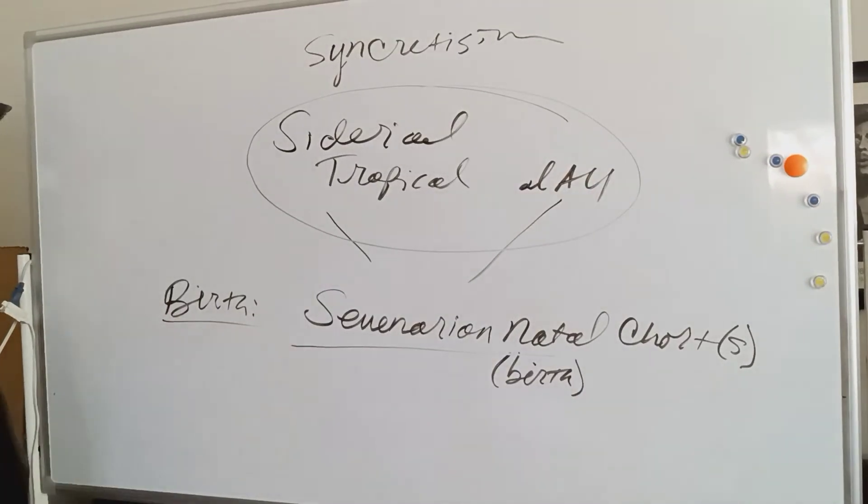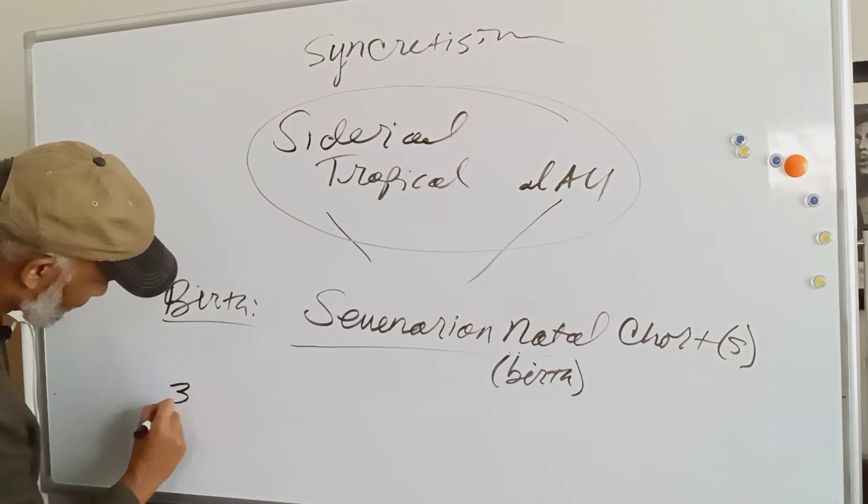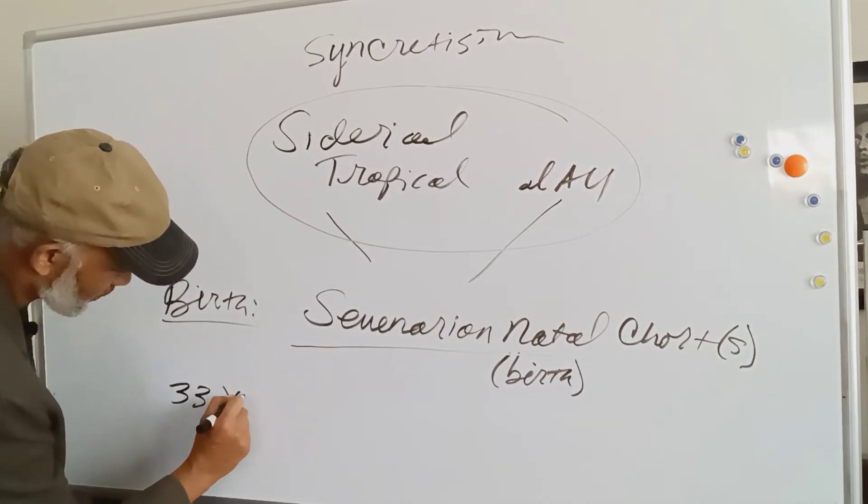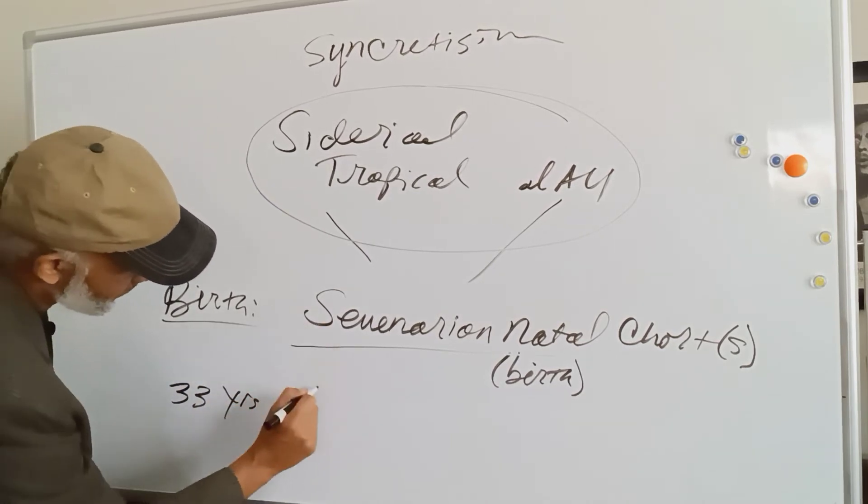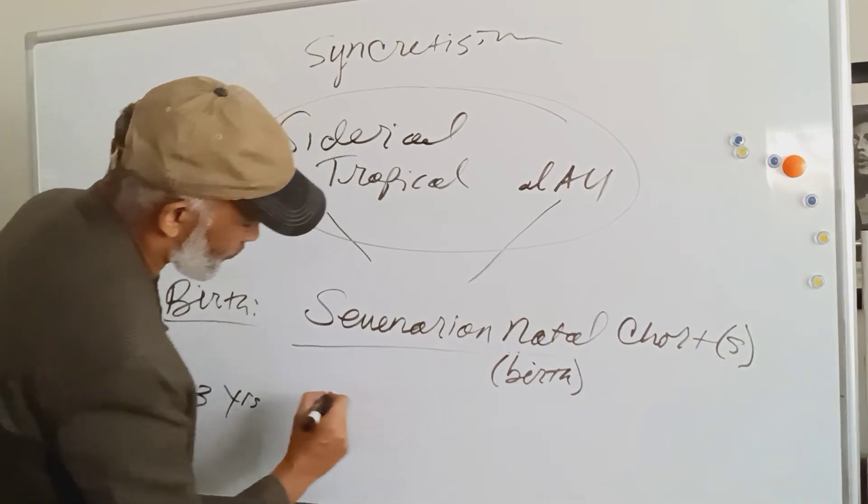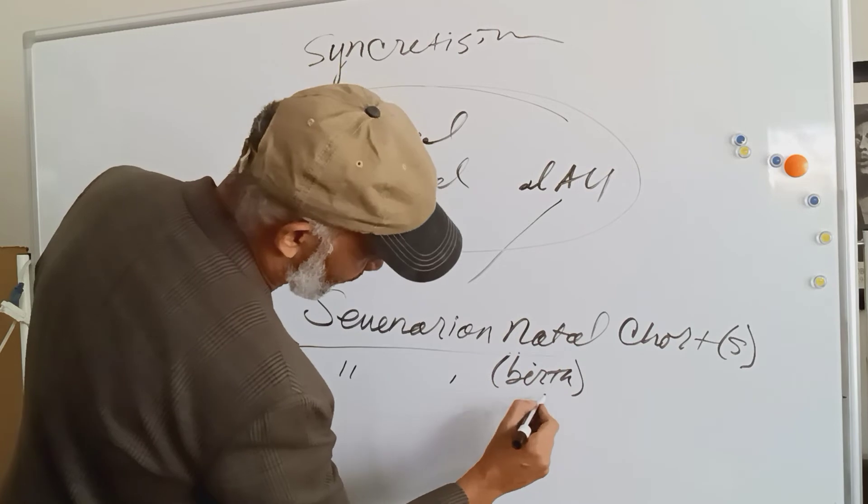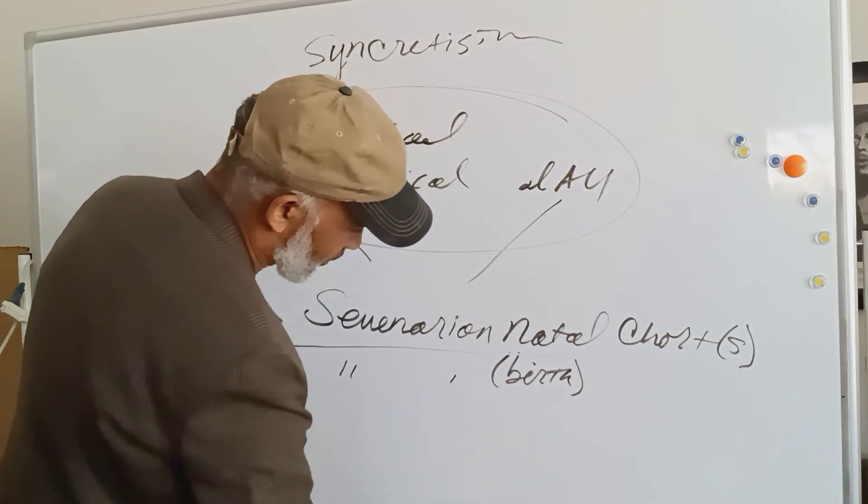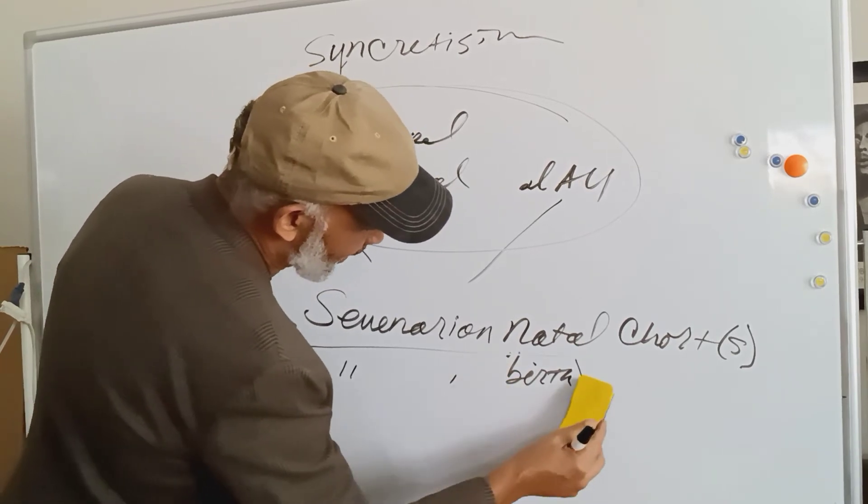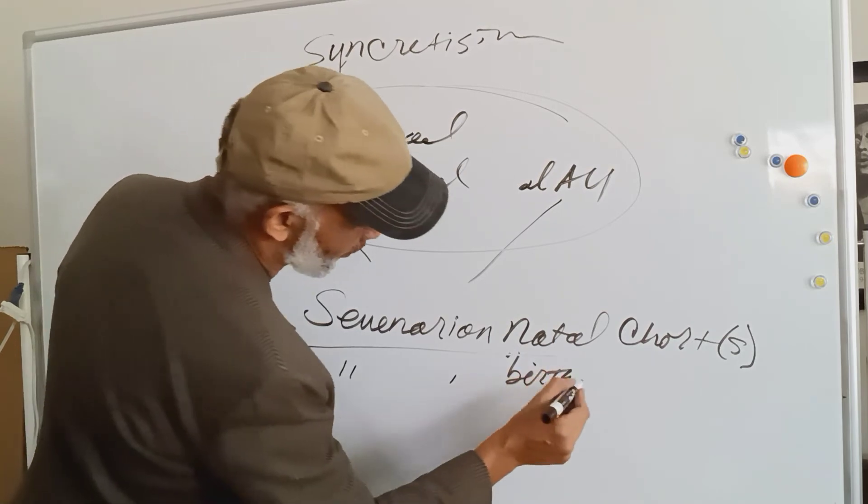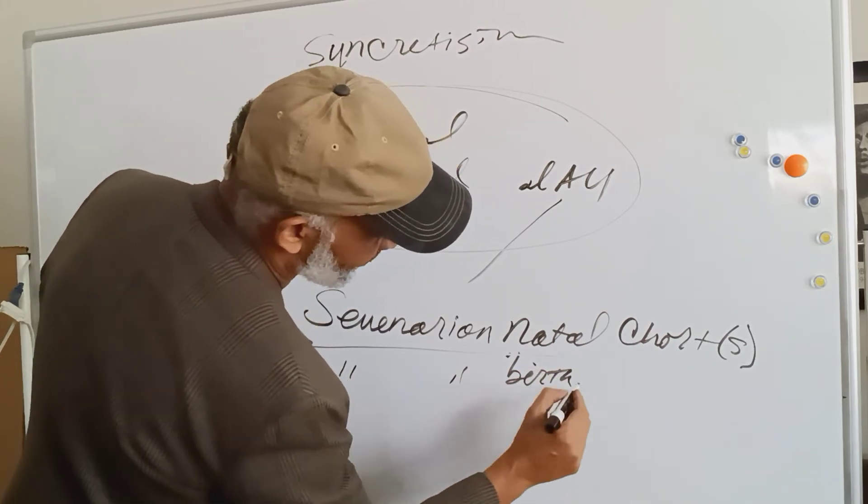And then at 33 years, you're given another one. You're given another name. This is the birth chart then. So the first one is called natal chart. This one is called the birth chart because at 33 you have a second birth.